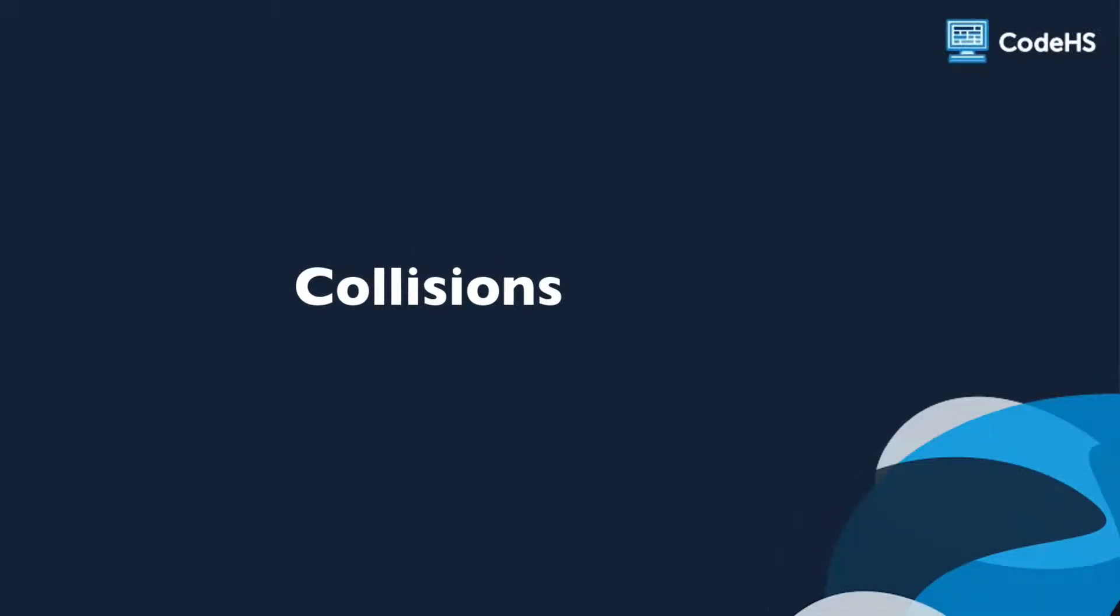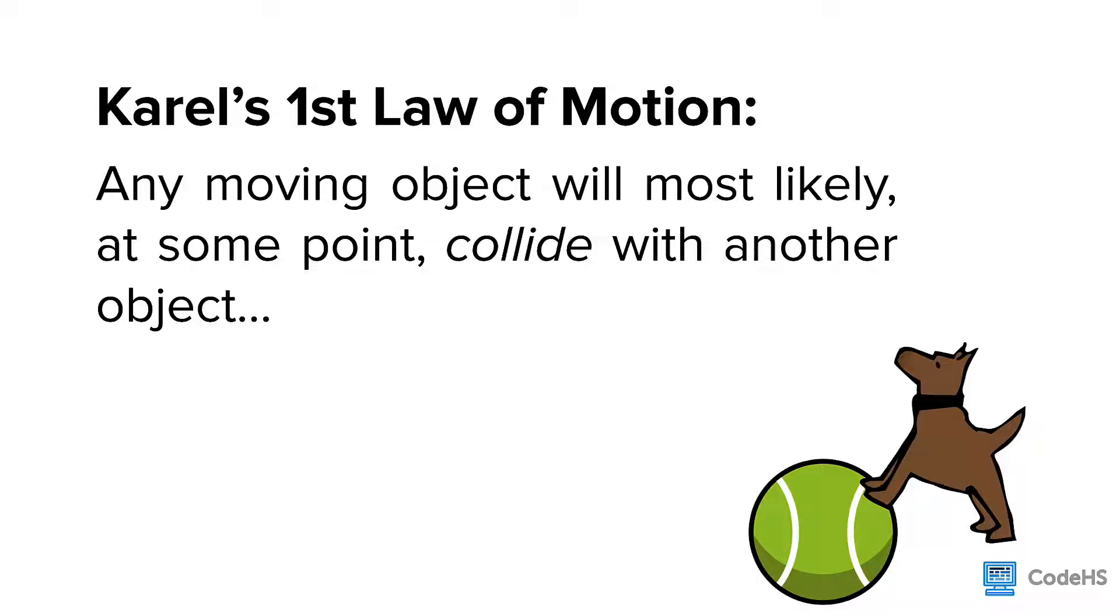Hi! Let's talk about collisions. If Carroll had a law of motion, it might state that any moving object will likely, at some point, collide with another object, or a wall, or the ground.